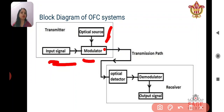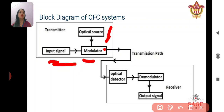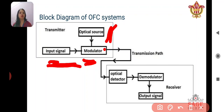The optical fiber carries the optical signal. The audio signal, which is a sound wave, is converted into an optical signal. The modulator merges the signal into the optical fiber. The signal is then transmitted through the optical fiber using internal reflection.